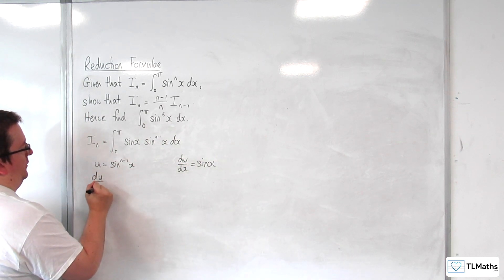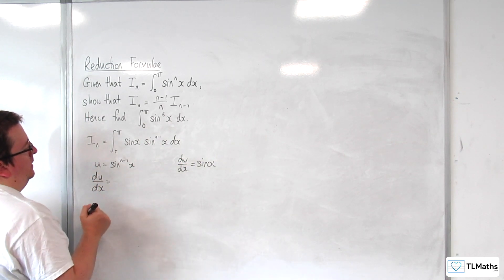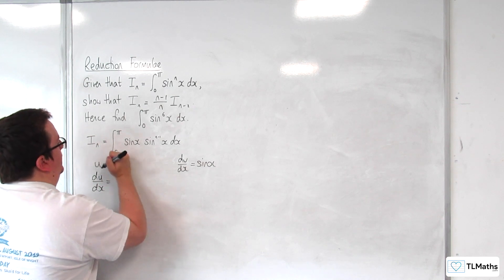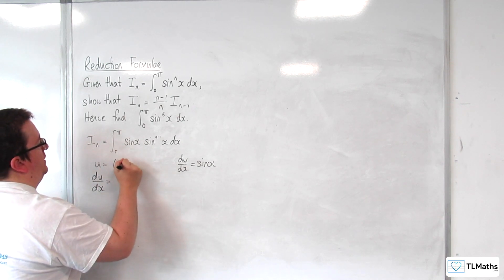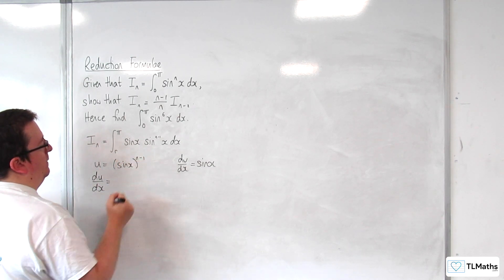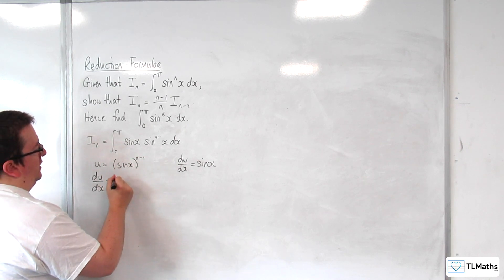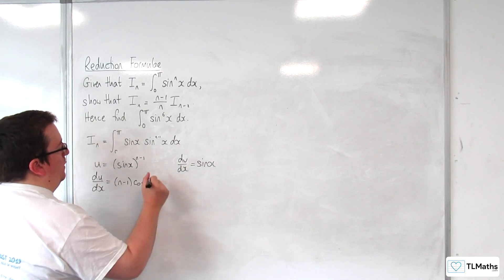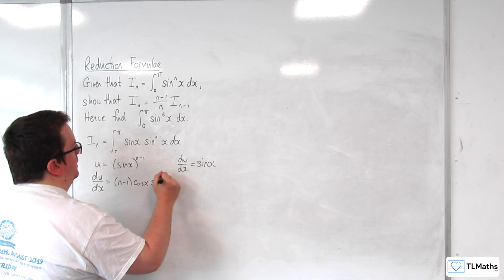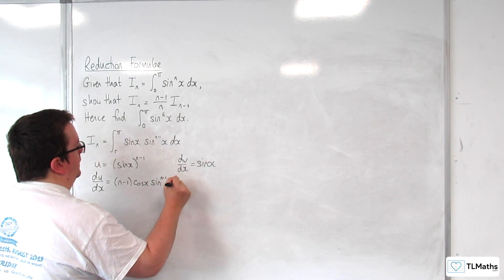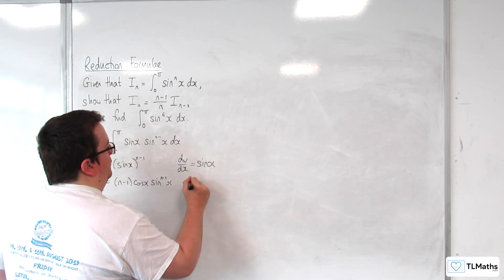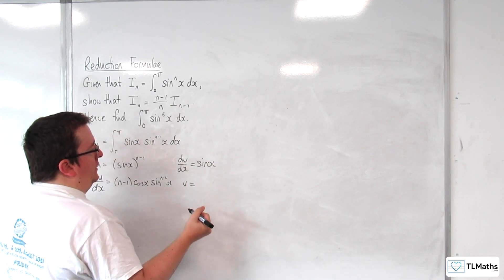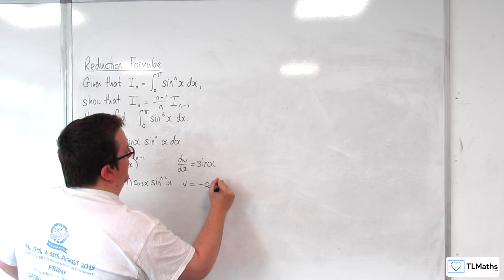So du/dx, using the chain rule - you might find it easier to visualize if we write it as sin^(n-1)(x). The n-1 comes down to the front, the derivative of the inside comes outside, and we take 1 from the power, so sin^(n-2)(x). And v, integrating sin(x), will get us to -cos(x).